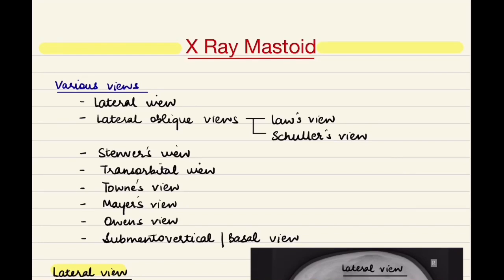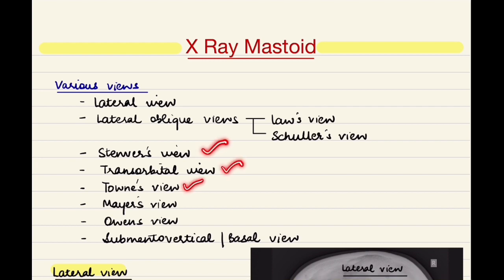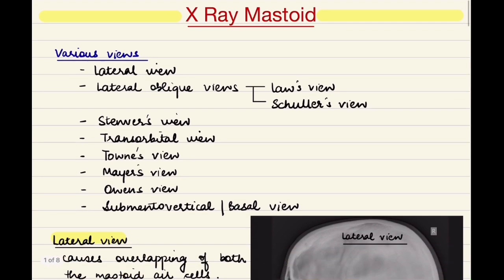Hello everyone, welcome back to Noteworthy ENT. In this lecture we are going to discuss about the various x-rays of the mastoid region. There are a lot of views we can do for the x-rays, namely the lateral view, lateral oblique views which are Law's view and Schuller's view, Stenvers' view, transorbital view, Towne's view, Mayer's view, Owen's view and the basal view. There are a few others also but we will restrict our discussion to these.